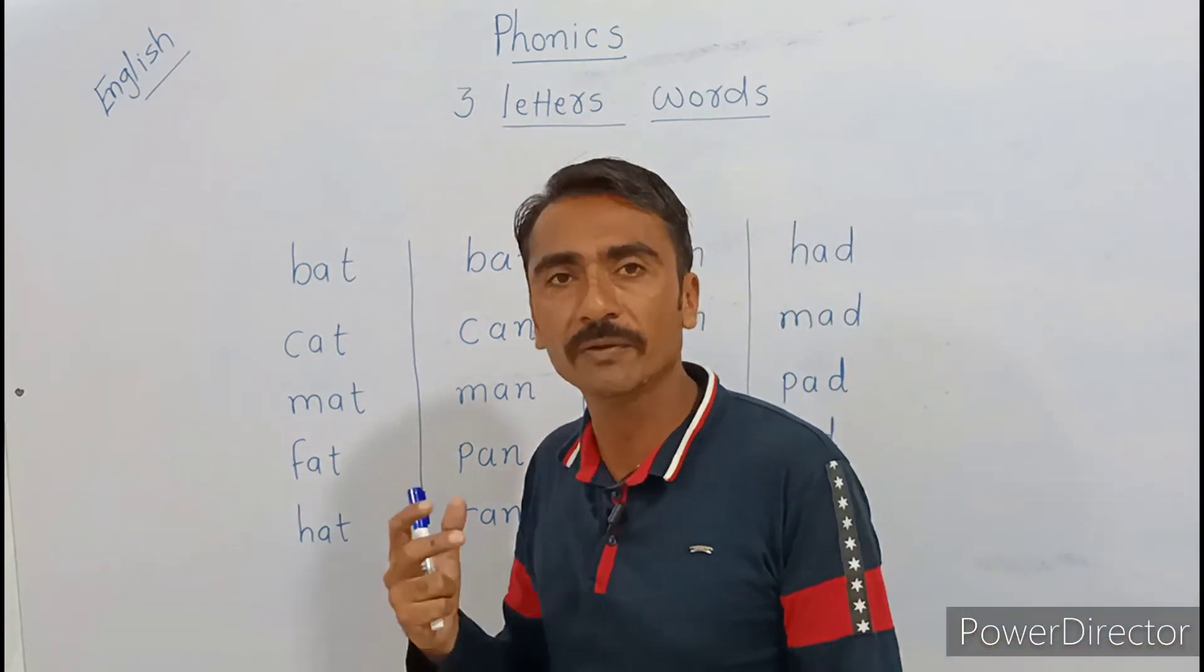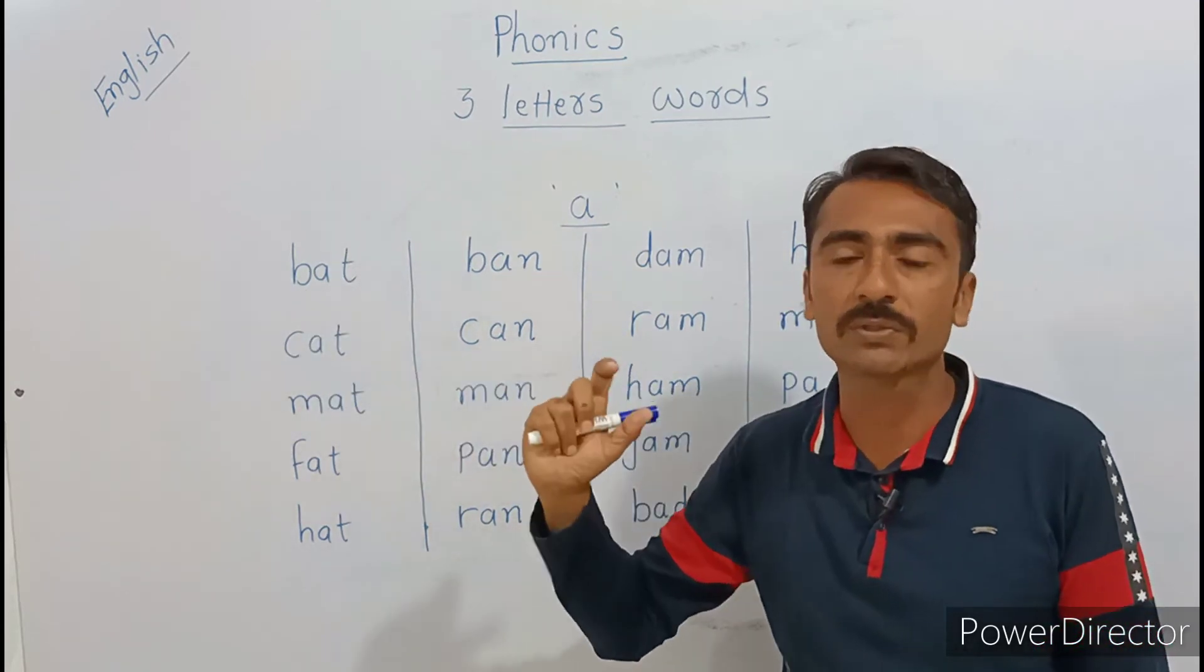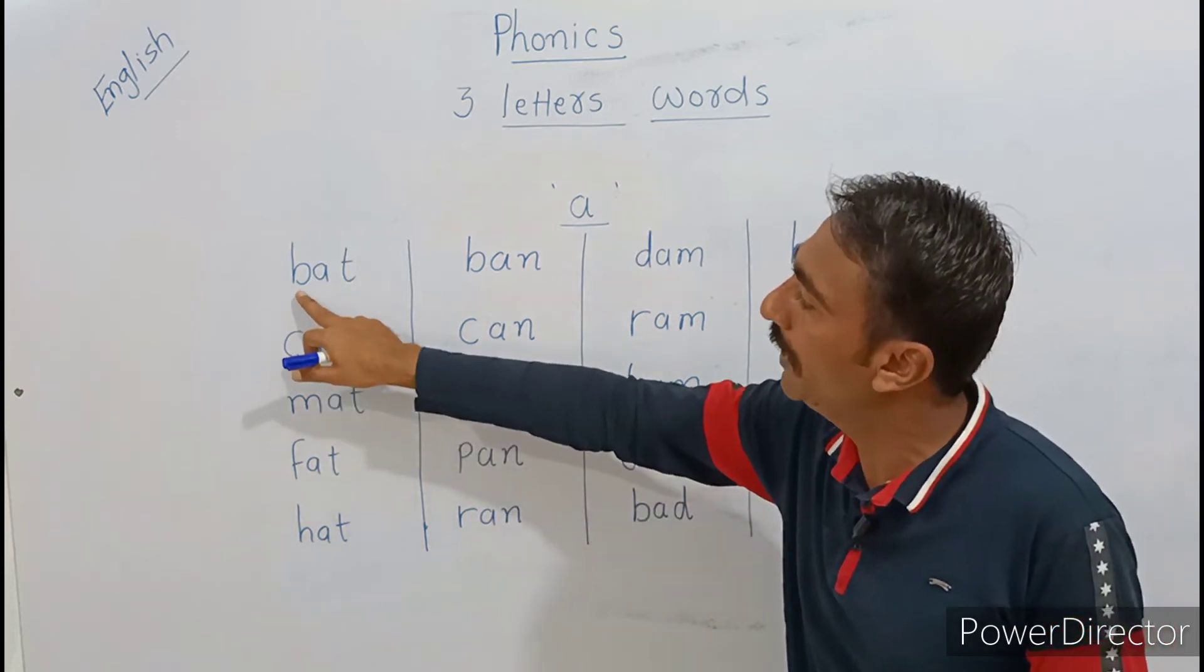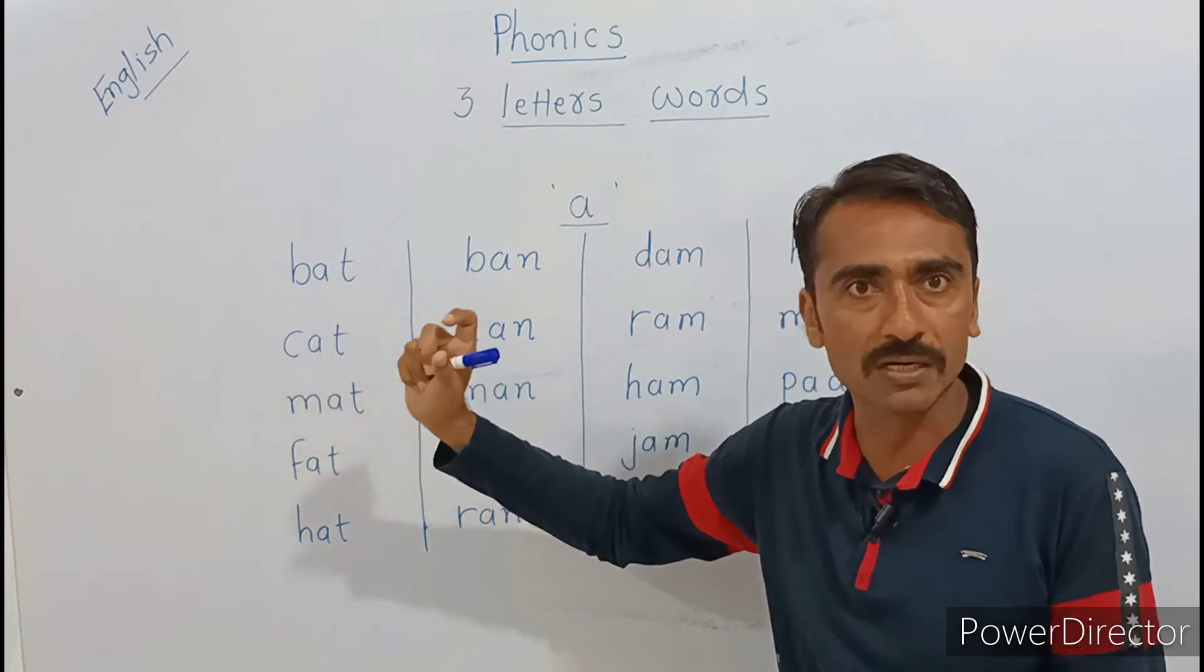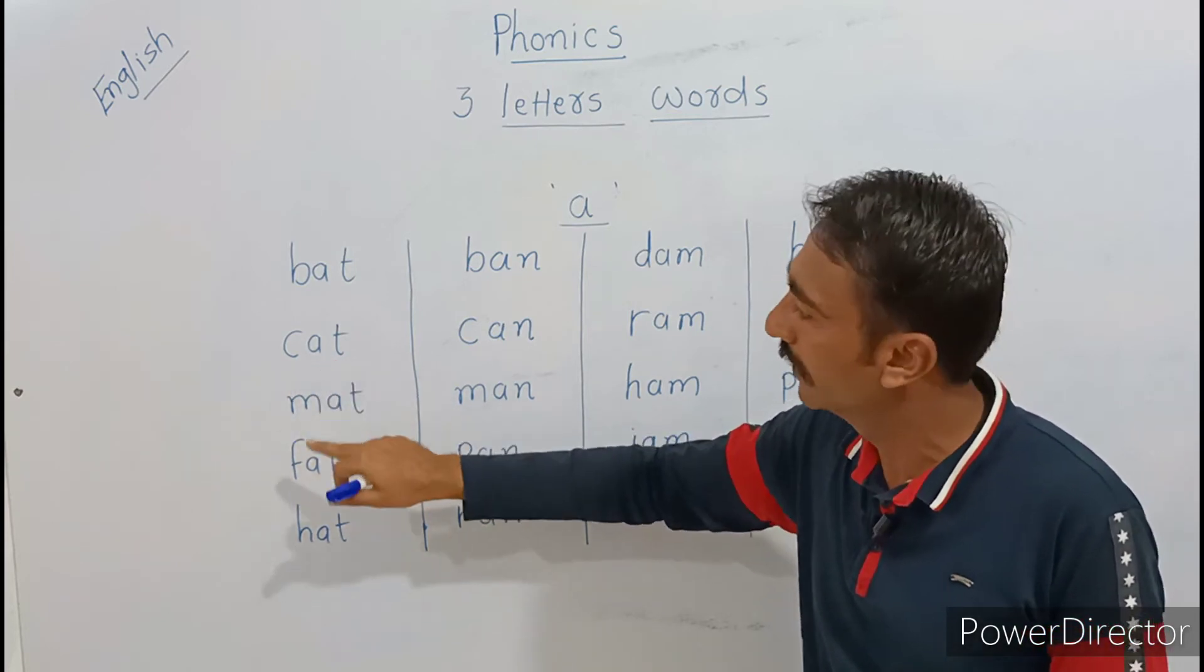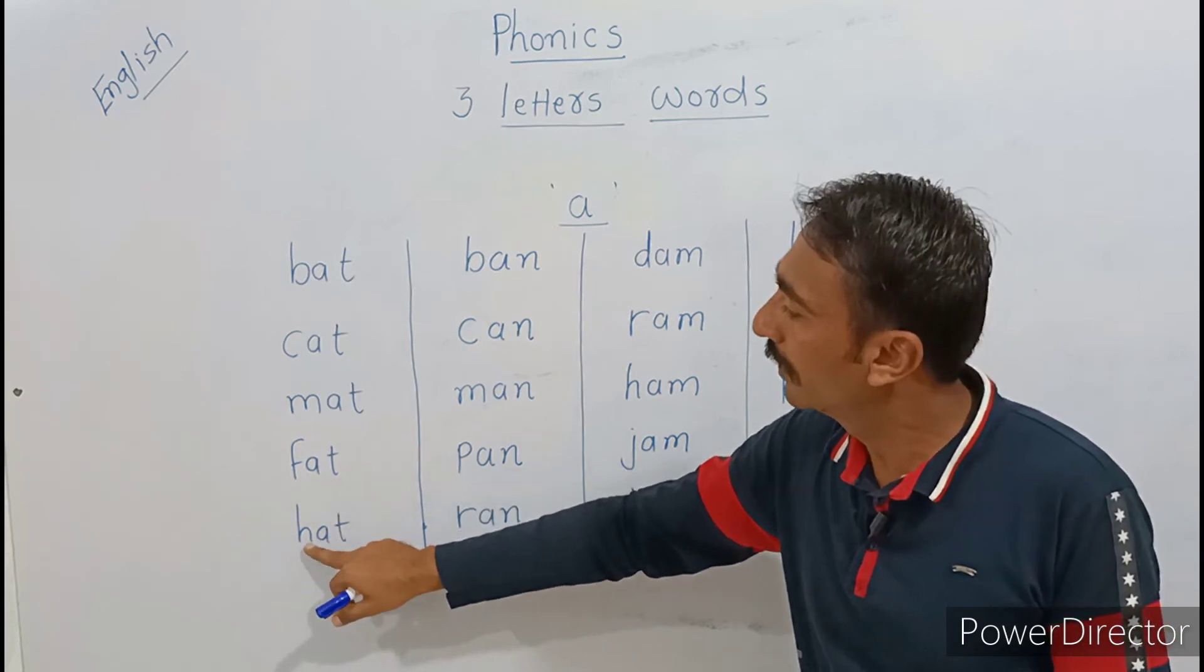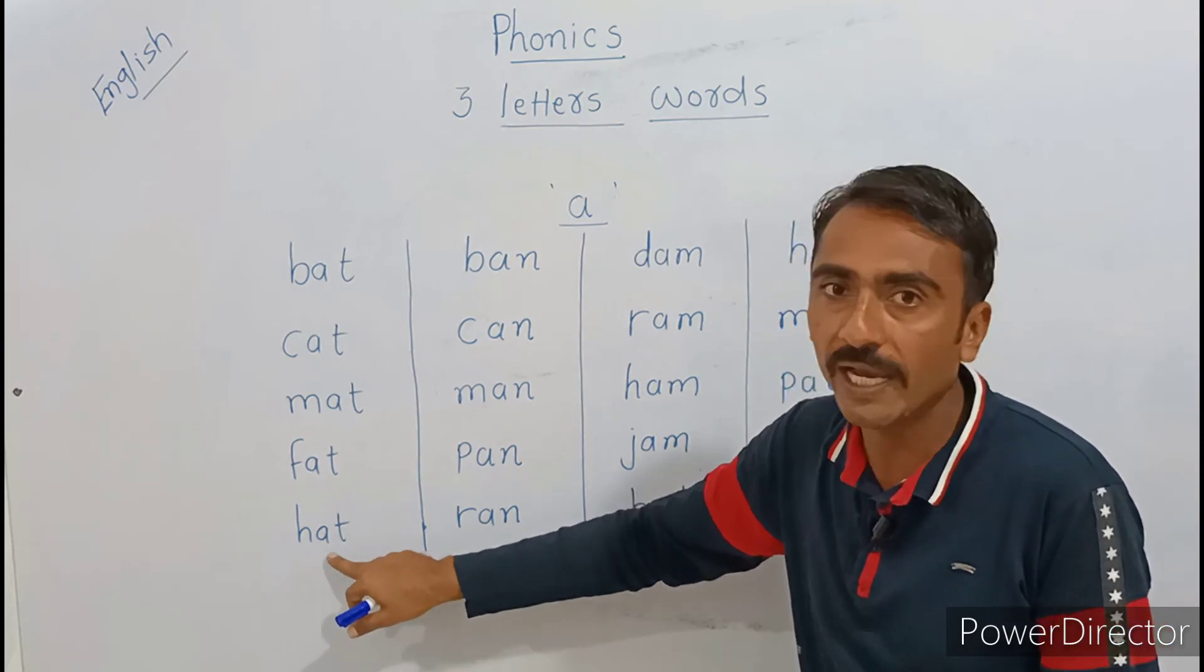Phir se hum ek baar repeat karte hain. Phir se main aap ko samjhata hun. B-A-T, to yahan pe jo B hai, uska jo uchaar hai, wo kya hai? B-A-T. To aap jante hain, do letters mein bhi aata tha. A-T, yani A-T hota hai. To B-A-T, matlab B-A-T, bat. C yani ka, C-A-T laga hai, to kya hoga? C-A-T, cat. M-et, mat. F yani fa, F-A-T yani fat. H yani hat, et, hat, kya hat.